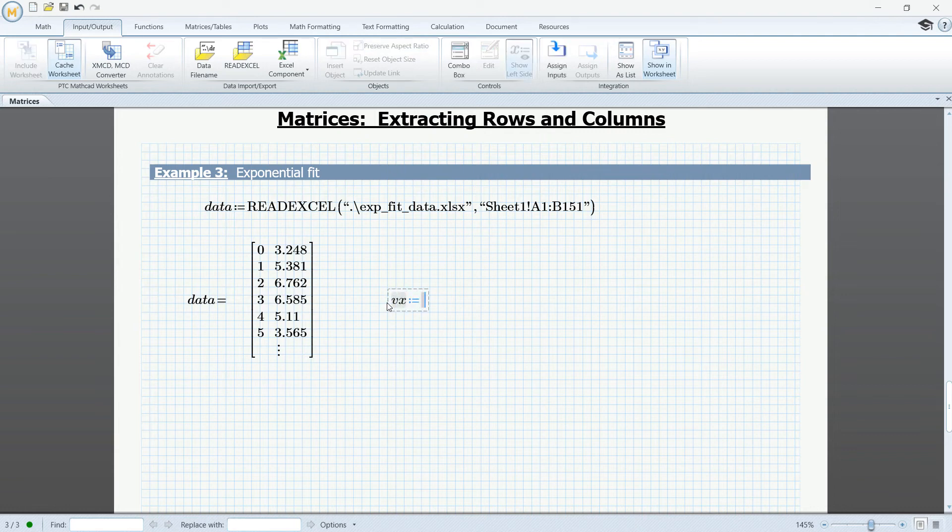So, I'm going to define my first vector called V of X, type in the name of my data array, use Ctrl-Shift-C for the column operator and type in here the value 0 for the first column. And I'm going to do the same for Vy, data column 1. So, at this point, the data is split into two vectors.